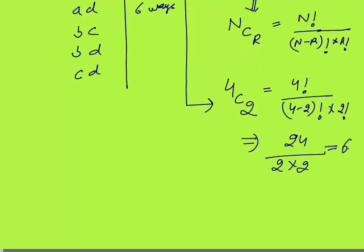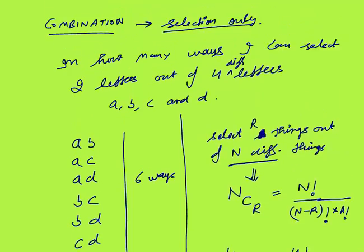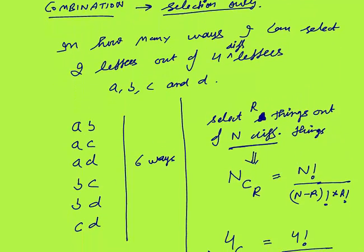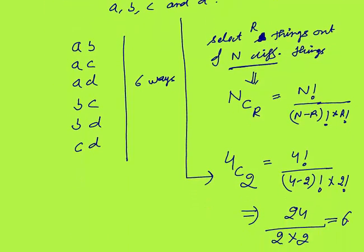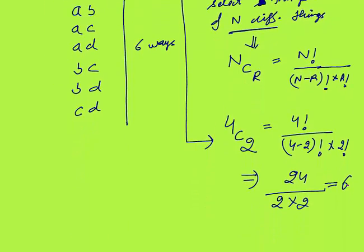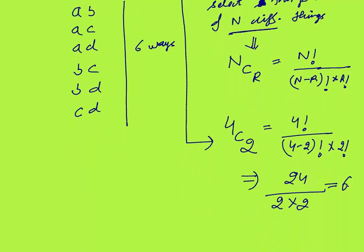This we have done with the formula and we will apply it for all future questions. So if you have to select R things out of N different things — only select — then the formula will be NCR.